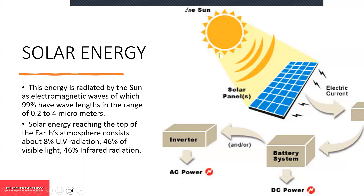The solar energy obtained from the sun reaches the top of the earth's atmosphere. You will be seeing in the next lecture series why we refer to the top of the atmosphere rather than direct interception at the earth's surface. For now, the solar energy falling on the upper surface of the earth consists of 8% UV radiation, 46% visible light, and 46% infrared radiation.